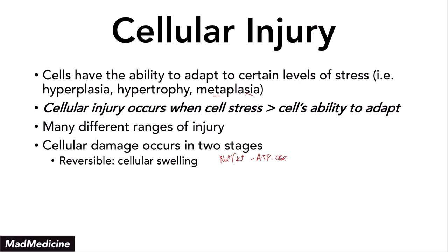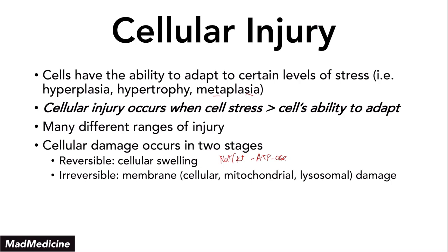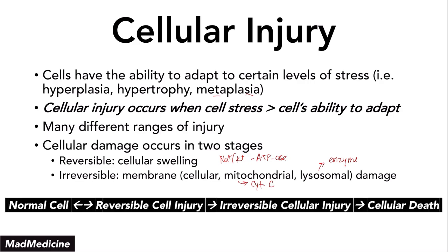If you do not remove the stress at the reversible stage, you will progress to the irreversible stage, which is characterized by membrane damage — not just of the cell, but of the mitochondria too. The mitochondria will release cytochrome C from its inner mitochondrial membrane, and the lysosome will release lysosomal enzymes. These enzymes and cytochrome C will further the cascade, and at this point irreversible damage will progress to cellular death through necrosis or apoptosis.